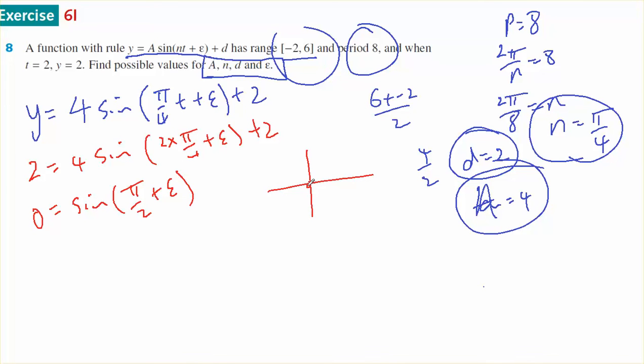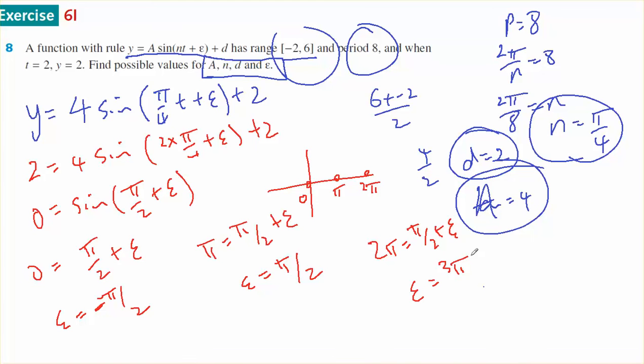Where is sine 0? Sine is 0 at 0, π, 2π. So if 0 equals π on 2 plus e, then e equals -π on 2. Or if π equals π on 2 plus e, then e equals π on 2. And if 2π equals π on 2 plus e, then e equals 3π on 2.